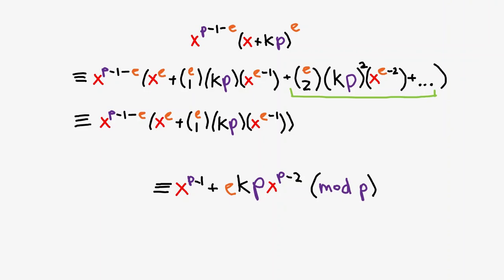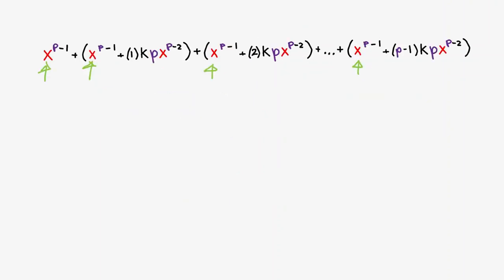Putting all of these back into our expression, we get a bunch of x to the p minus 1 terms, as well as kpx to the p minus 2 terms. We can collapse the x to the p minus 1 terms into a single term. The kpx to the p minus 2 terms have coefficients of 1, 2, 3, all the way up to p minus 1, which we can also simplify.